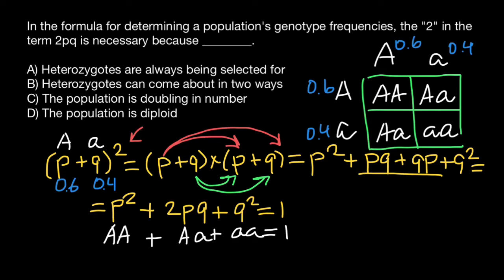And as for the frequency of the heterozygous genotype, as you see, we can see it twice here. So hence this two in the formula.